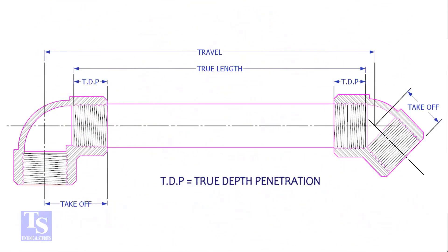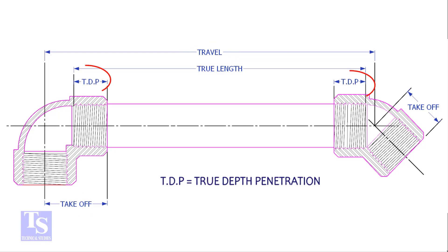To determine the true length of a threaded pipe, we need to know four key factors: 1. Travel length, 2. Take-off length, 3. TDP — true depth of penetration, and 4. Pressure temperature rating.